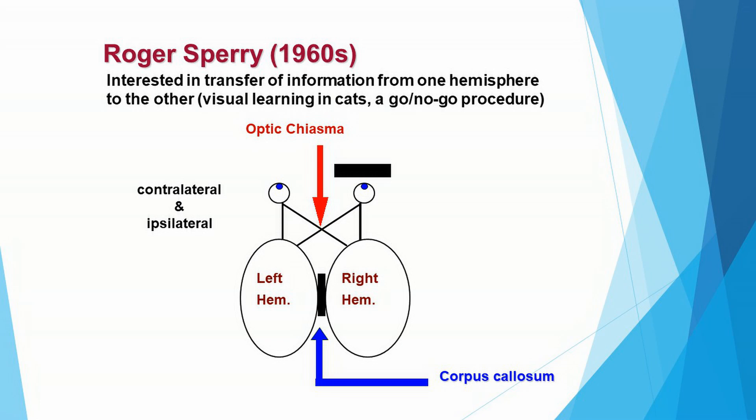That point of crossover for the contralateral connections is called the optic chiasma. Roger Sperry had to cut the optic chiasma in cats in order to control which hemisphere received information from which eye. Here you have a cat wearing an eye patch over the right eye; the optic chiasma has been cut. The animal is trained in the go-no-go procedure so that only the left eye is involved, sending information ipsilaterally straight back to the left hemisphere, but no longer to the right hemisphere.